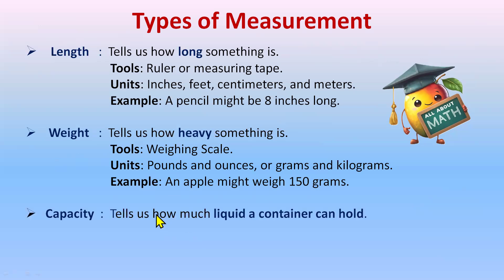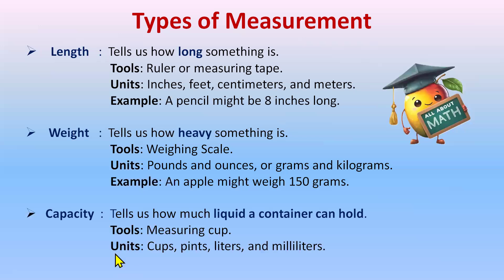The third type of measurement is capacity, which tells us how much liquid a container can hold. The tools to measure capacity include the measuring cup, and the units are cups, pints, liters, and milliliters.